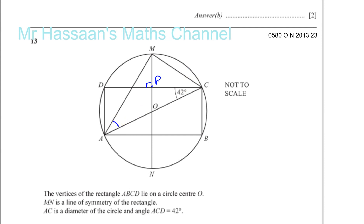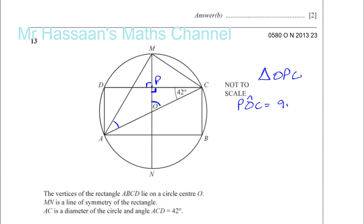Angle CAM is this angle over here. Since MN is the line of symmetry of rectangle ABCD, this angle at point P is 90 degrees. So we have triangle OPC, which is a right-angle triangle. That means angle POC equals 90 minus 42, because these two angles must add up to 90 to make the triangle 180 in total. So POC = 90 − 42 = 48 degrees.